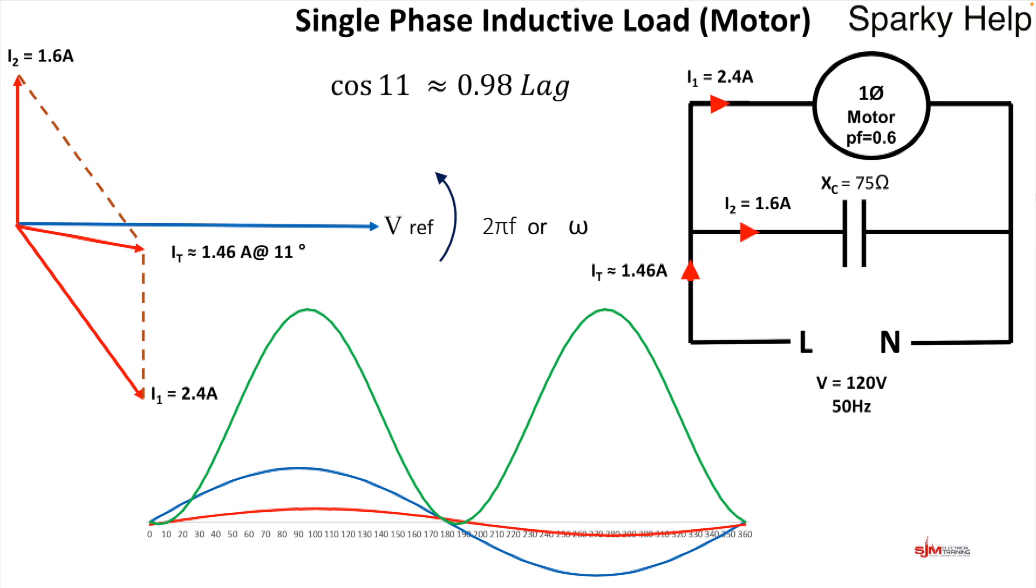Now what impact does this have on. Well basically it means. The IT part. Which would be the supply going to your circuit. Can be much smaller. Which means the cable is smaller. Which means the circuit breaker is smaller. Which means the demand on the system is smaller. But more importantly. From a commercial or industrial point of view. Who pay for VA. They save money on their energy.